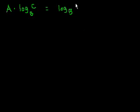relearn everything every time. So the next logarithm property is if I have A times the logarithm base B of C, if I have A times this whole thing, that equals logarithm base B of C to the A power.